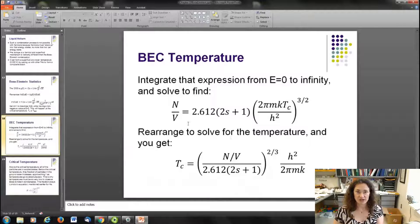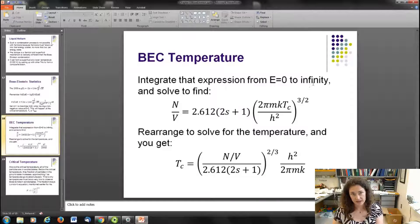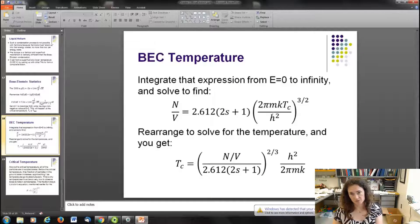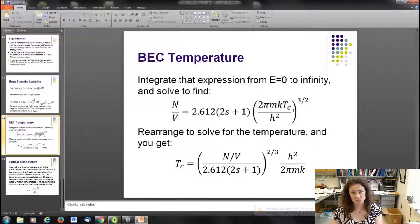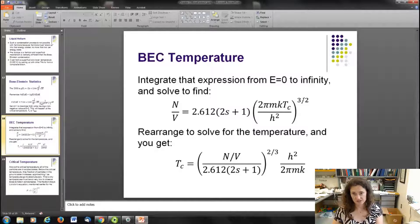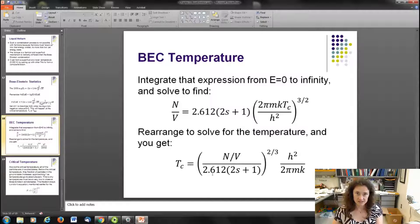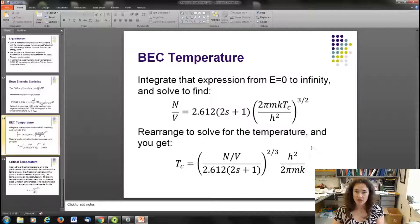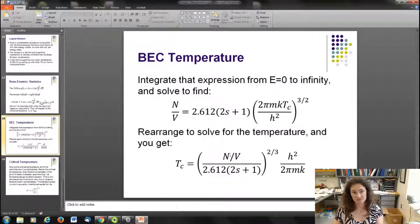So if you integrate that expression that I had on the previous slide from zero to infinity and then solve for your expression, then you can divide through by the volume and get N/V = 2.612(2s+1)(2πmkTc/h²)^(3/2). And then you can rearrange that and solve for your temperature. And if you do that, you get Tc = (N/V)[2.612/(2s+1)]^(2/3)(h²/2πmk). k here is Boltzmann's constant. And you can use that expression to solve for the critical temperature that something becomes a Bose-Einstein condensate at given a specific density.